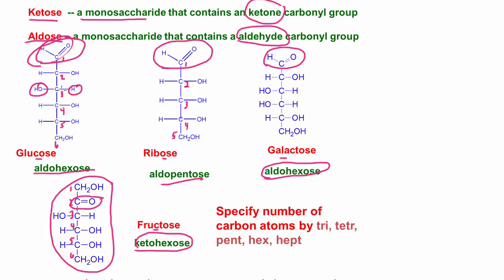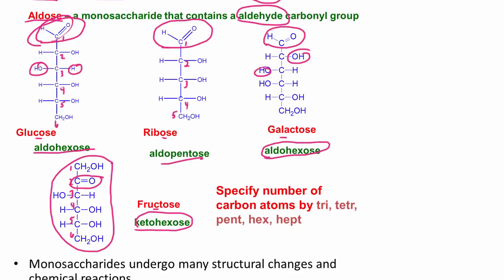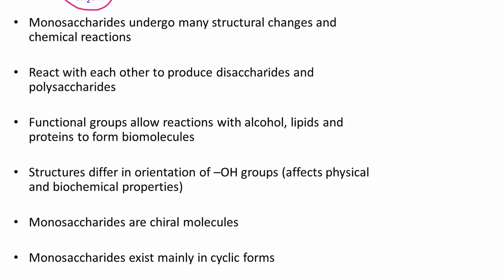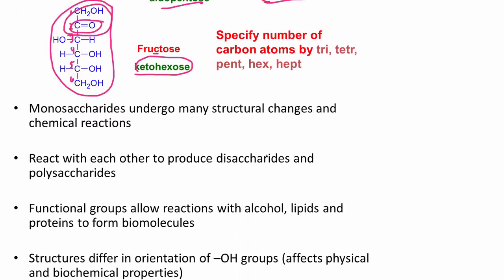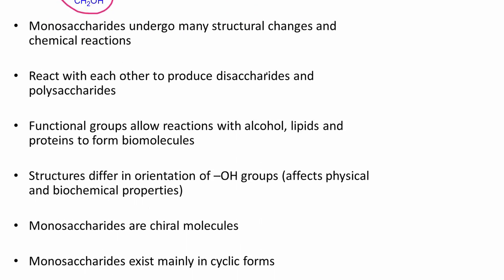Monosaccharides undergo many structural changes and chemical reactions. Think about it — we already talked about reactions of alcohols; look at all these OH groups. And we talked about reactions of aldehydes and ketones, so they're going to undergo a lot of reactions. The reactions for these larger molecules are the same as what we studied for smaller organic molecules — functional groups are the same. Monosaccharides will react with each other to produce both disaccharides and polysaccharides.